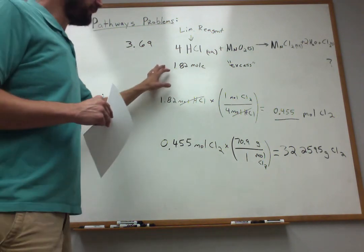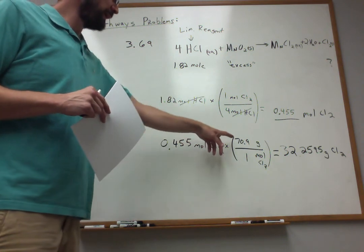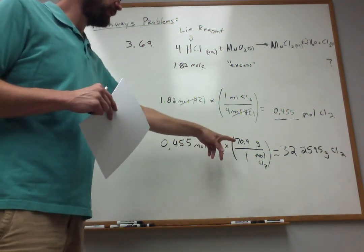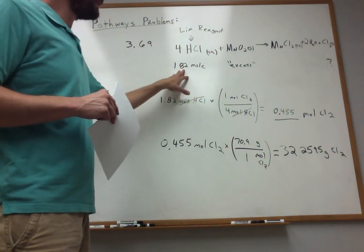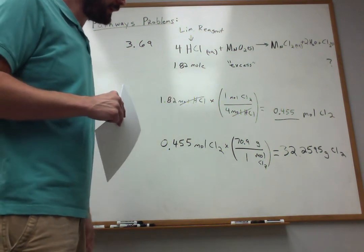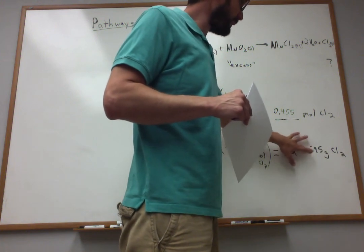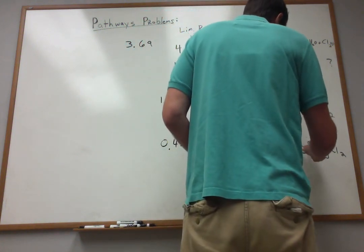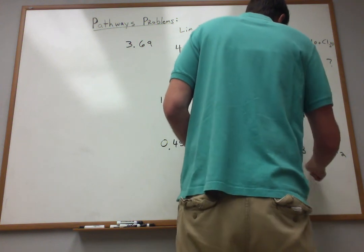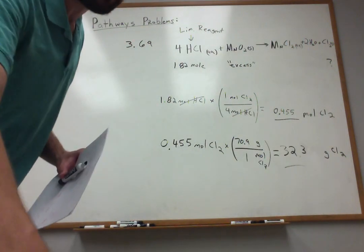Now, if I'm worried about sig figs, these are exact whole number ratios. I had three here. I could probably get a fourth if I'm more careful. But back to the beginning, I had three here. So I might want to truncate my answer to three. So in this particular case, since this is a five, I might choose to round that up to a three. This is 32.3 grams. I'll be down with that. So this is 3.69.